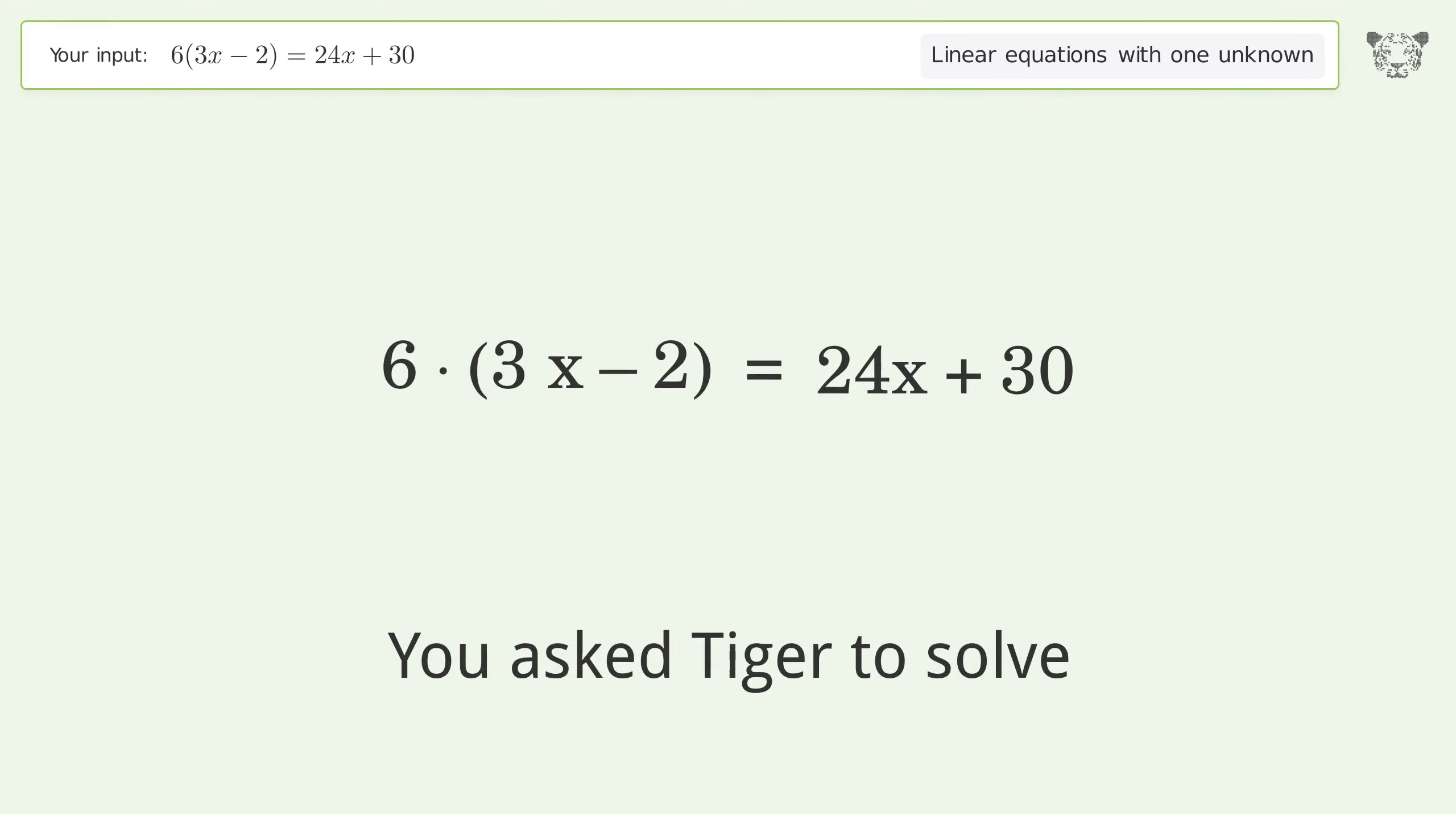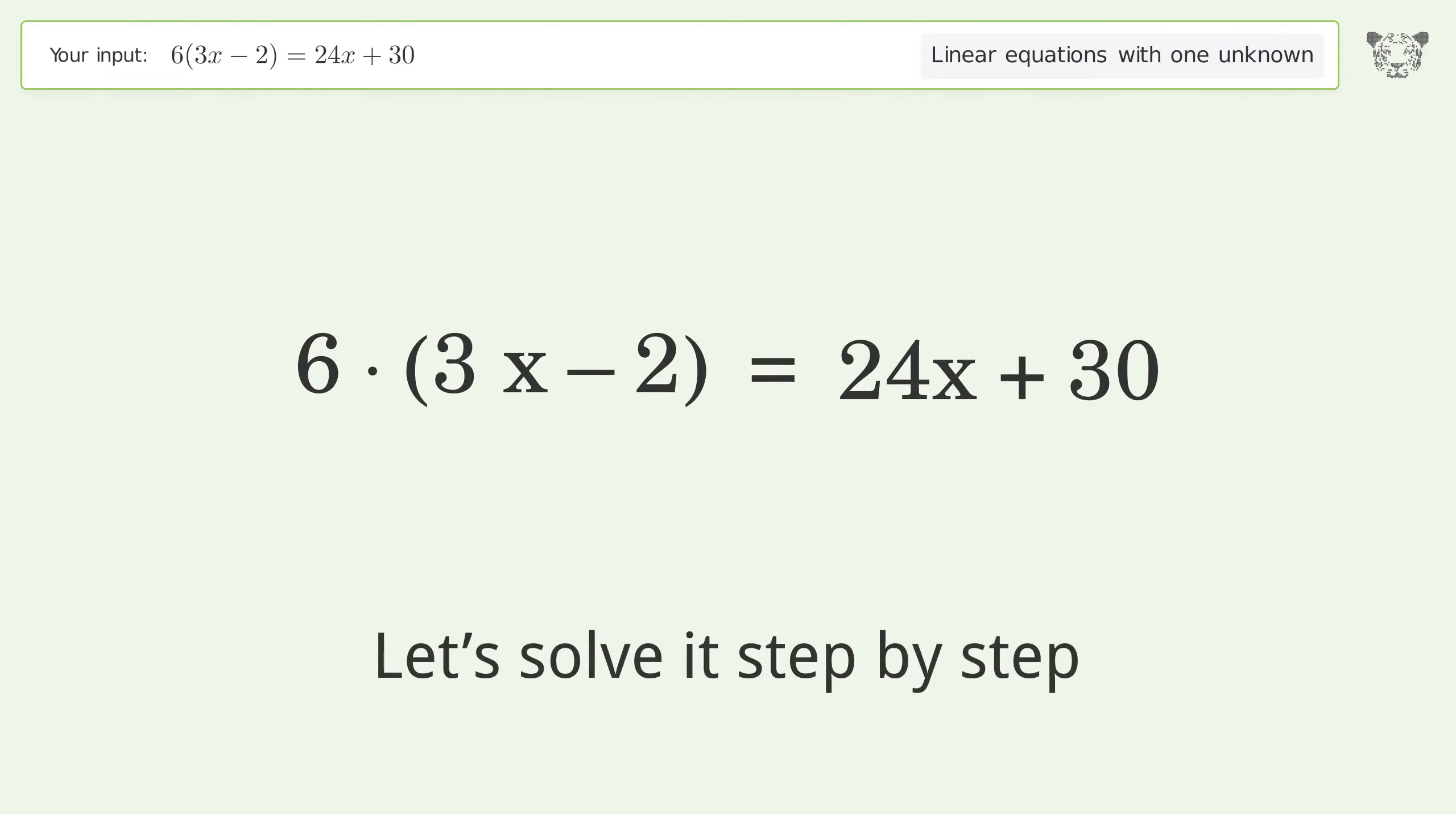You asked Tiger to solve this, which deals with linear equations with one unknown. The final result is x equals negative 7. Let's solve it step by step and simplify the expression.